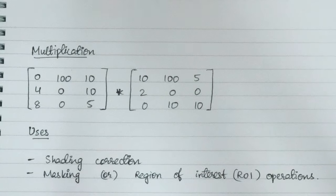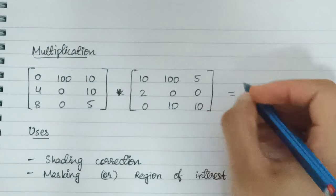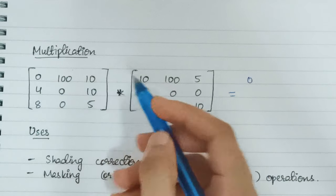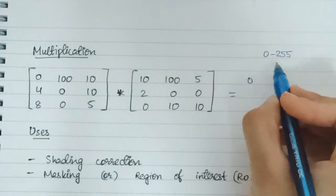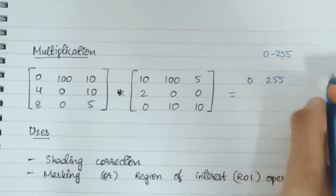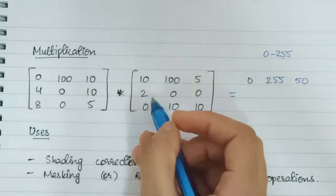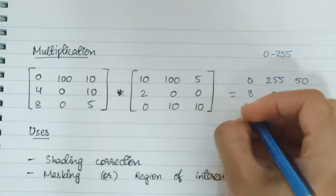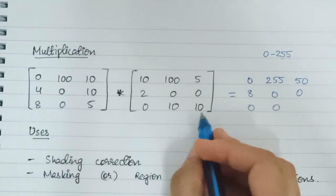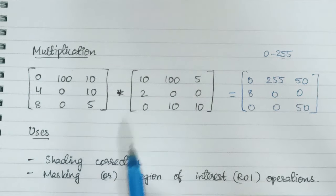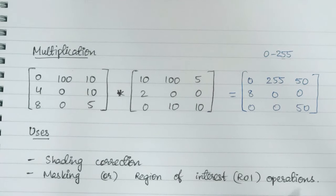Next is multiplication — simple pixel multiplication. 0 times 10 is 0. 100 times 100 is 10,000 which exceeds 255, so we write it as 255. Then 10 times 5 is 50, 4 times 2 is 8, 0 times 0 is 0, 10 times 0 is 0, 8 times 0 is 0, 0 times 10 is 0, and 5 times 10 is 50. This is our new image. The uses of multiplication are shading correction and masking, also known as region of interest operations.